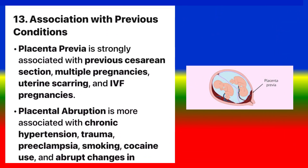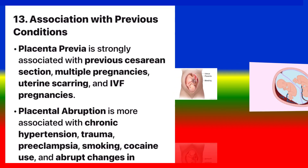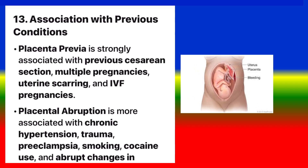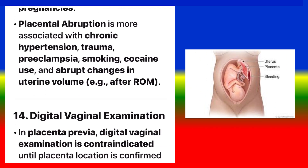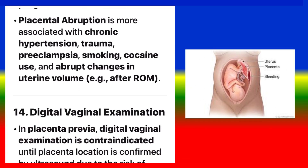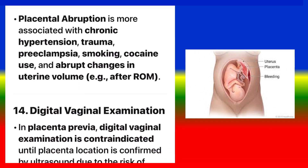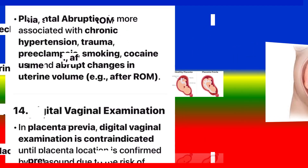Association with previous conditions. Placenta previa is strongly associated with previous cesarean section, multiple pregnancies, uterine scarring, and IVF pregnancies. Placental abruption is more associated with chronic hypertension, trauma, preeclampsia, smoking, cocaine use, and abrupt changes in uterine volume, e.g. after rupture of membranes.